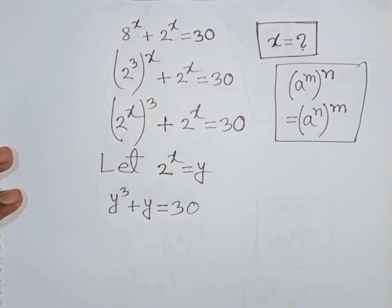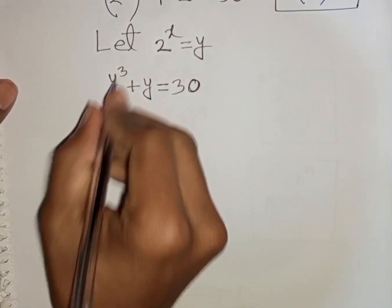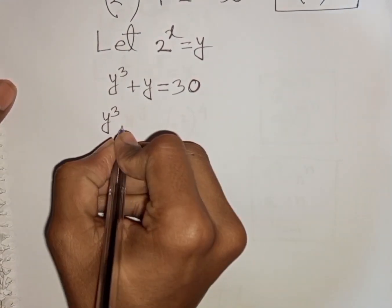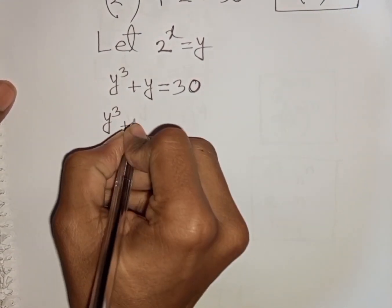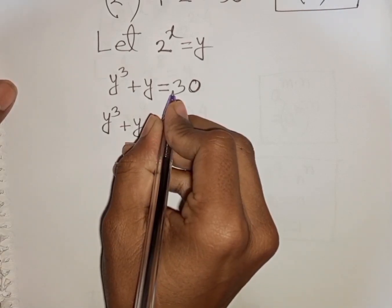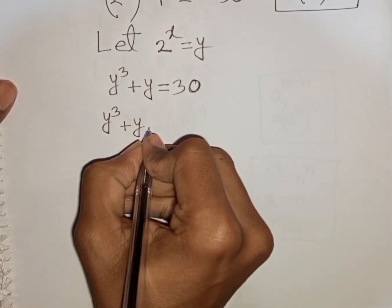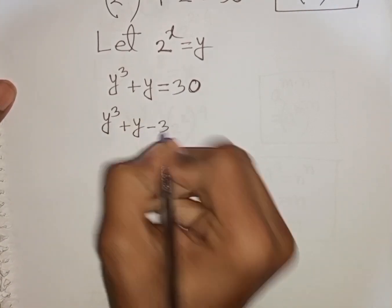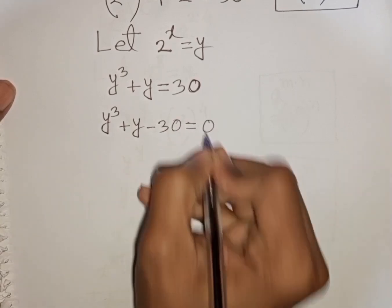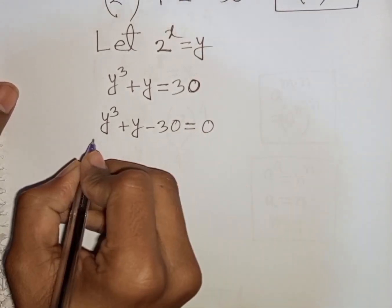Now I can write here y cubed plus y, then bring 30 to the left side, so this will be minus 30, giving us y cubed plus y minus 30 is equal to 0.